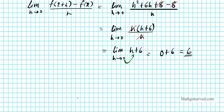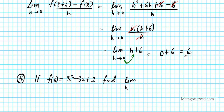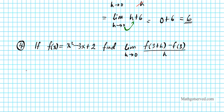Let's go ahead and try another example — question number 4. If f of x equals x squared minus 3x plus 2, find the limit as h approaches 0 of f of 3 plus h minus f of 3, divided by h. So the same procedure here. First thing we're going to do is find f of 3 plus h. To find that we're going to plug in 3 plus h for all the x's in f of x, so we're going to have 3 plus h squared minus 3 times 3 plus h plus 2.